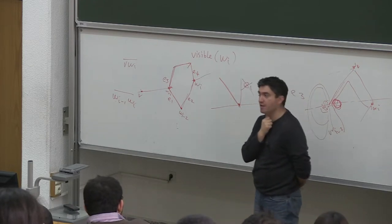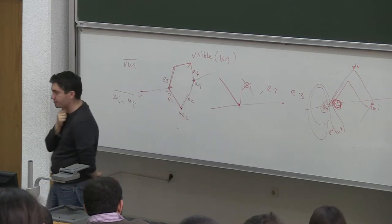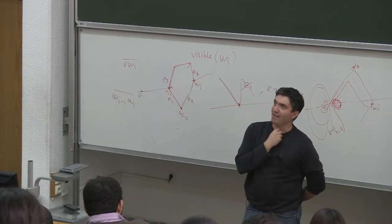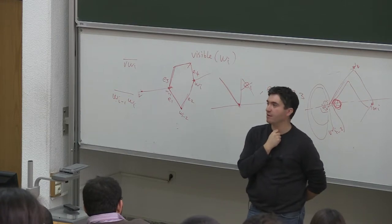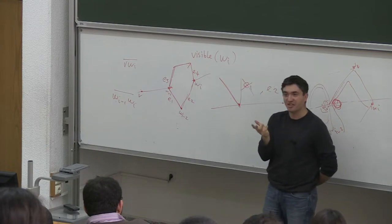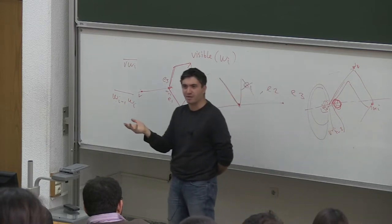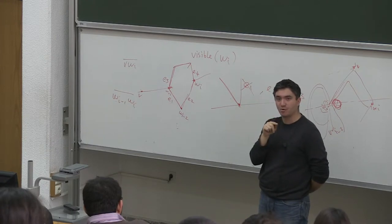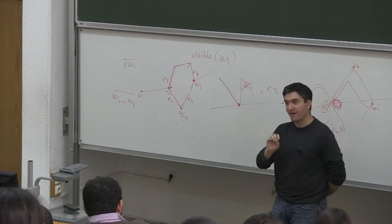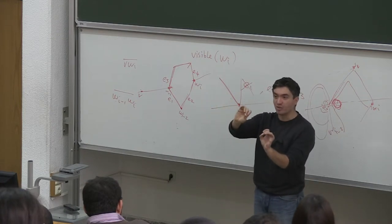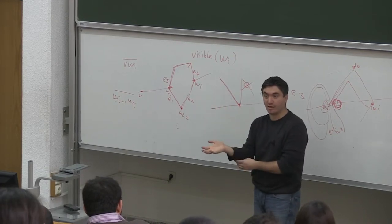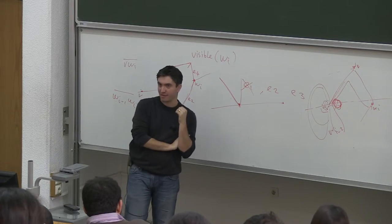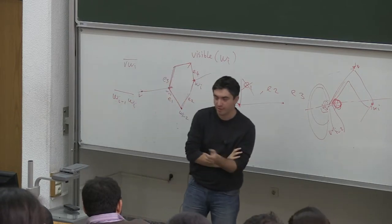After defining this visibility graph, we run Dijkstra's shortest path algorithm on it to find the shortest path. The rotational plane sweep builds the visibility graph in O(n² log n) time. Dijkstra's algorithm is linear in the size of the graph — number of edges plus vertices — and with up to O(n²) edges, it runs in O(n²), so O(n² log n) dominates.